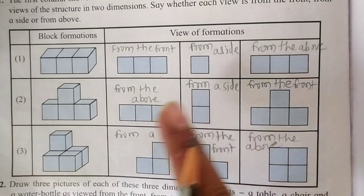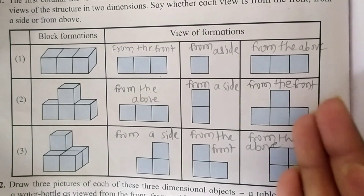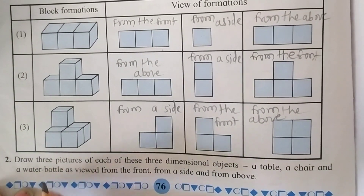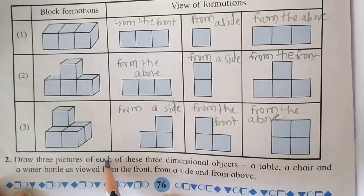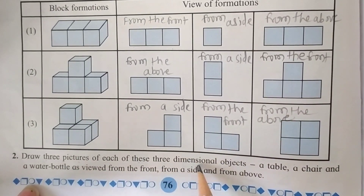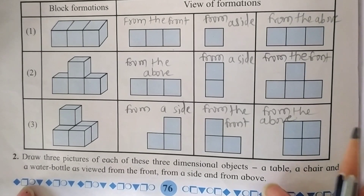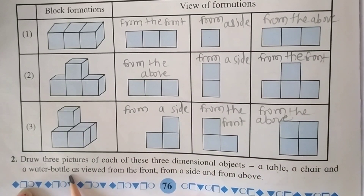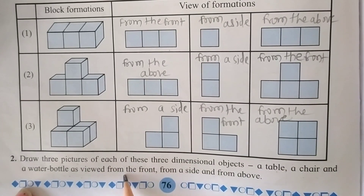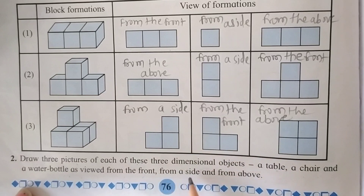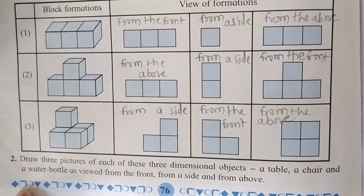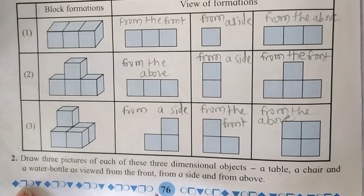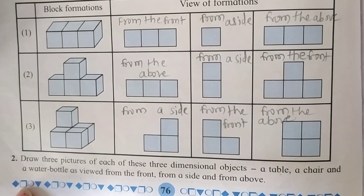This is the answer to our first question. Now look at the second question. The second question is: draw three pictures of each of these three-dimensional objects — a table, a chair, and a water bottle — as viewed from the front, from a side, and from above.